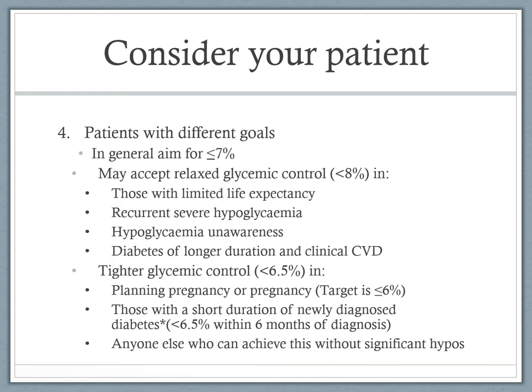It's important to consider patients who may have a different glycemic goal. In general, you would aim for a HbA1c of less than or equal to 7%, but you may accept more relaxed glycemic control in patients with a limited life expectancy, those with recurrent and severe hypoglycemic events, patients with hypoglycemic unawareness — a cohort that doesn't have symptoms to alert them to a hypo, which can be dangerous — and patients who have had diabetes for a long duration with clinical cardiovascular disease, such as those who have had a heart attack. Very tight control in those patients can actually be detrimental.